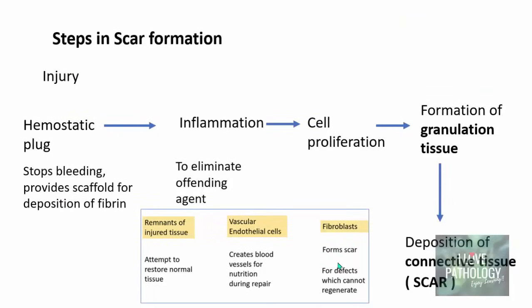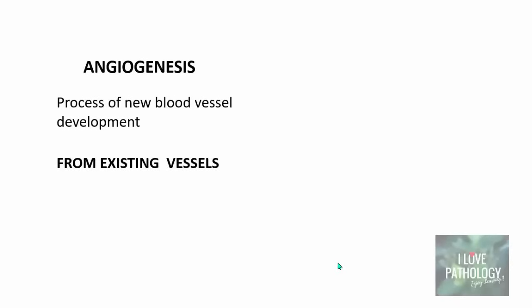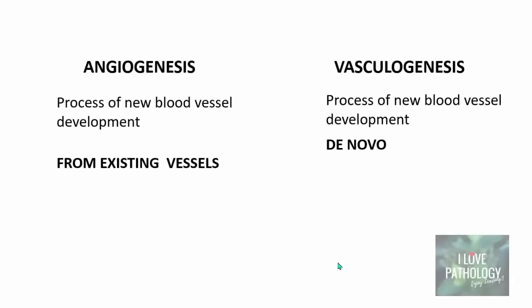Moving on to the steps of scar formation, we will now understand in detail the formation of granulation tissue — the hallmark of tissue repair. Granulation tissue is basically composed of newly formed blood vessels, so we need to understand angiogenesis. Angiogenesis is the process of new blood vessel development from existing blood vessels — importantly, this is different from vasculogenesis, which is de novo new blood vessel development occurring in the embryo from mesodermal origin cells.